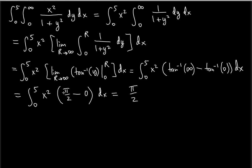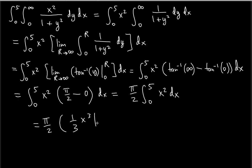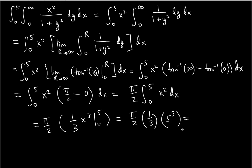So the result simplifies to pi over two times the integral of x squared dx from zero to five. We factor out pi over two as a constant, and integrate x squared using the power rule, giving one third x to the third evaluated from zero to five. The lower limit is zero, so we only need five cubed, which is 125.